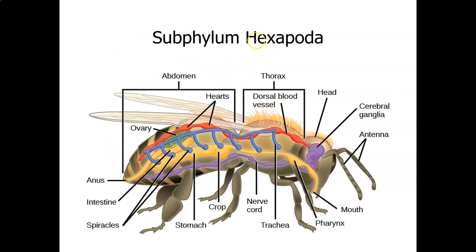The Hexapoda — 'hex' means six, like a hexagon has six sides — so insects have six legs. The Hexapoda is the subphylum Insecta.